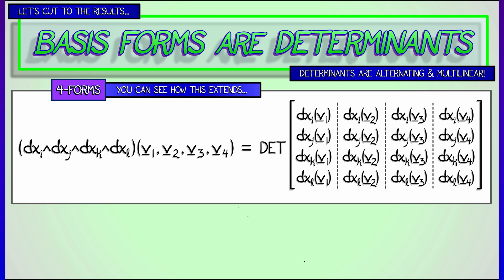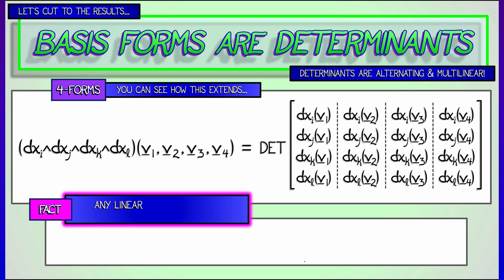Okay, those are basis forms on R^n. Here's a fact. Any linear form is built as a linear combination of these basis forms.